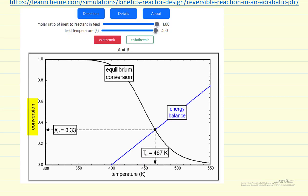What we're plotting is conversion versus temperature. The blue line corresponds to an energy balance. So it's an exothermic reaction. If we convert twice as much, we get twice the temperature change. We're assuming heat capacities are constant, heat of reaction is constant.